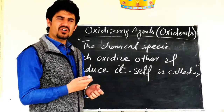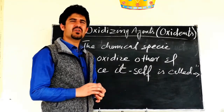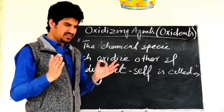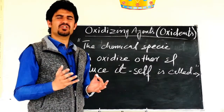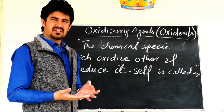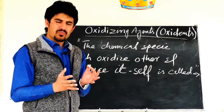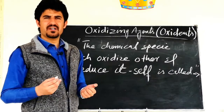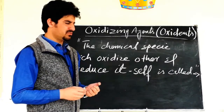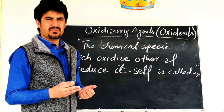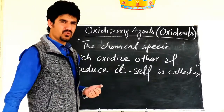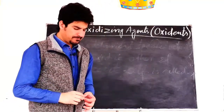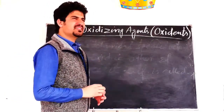How can we recognize an oxidizing agent? I have tried to clarify this method. In the entry test, there are a lot of questions, so it is somewhat conceptual. Kindly concentrate on the lecture. Now let's start and remember the first category, the first case.